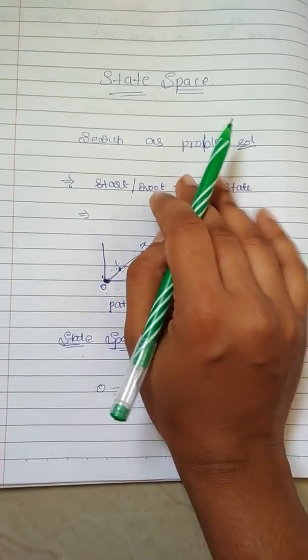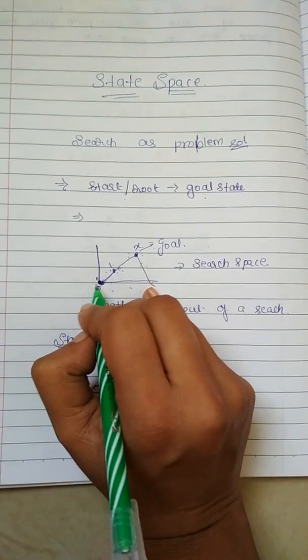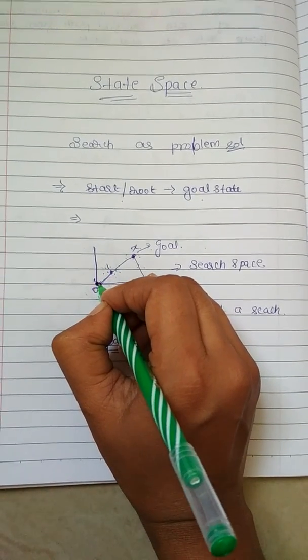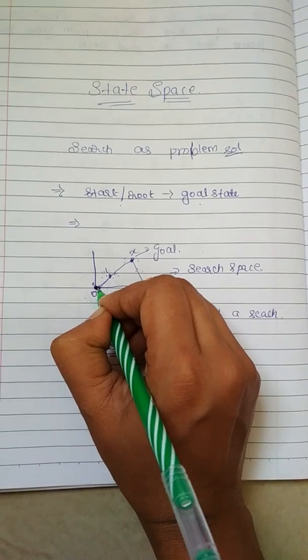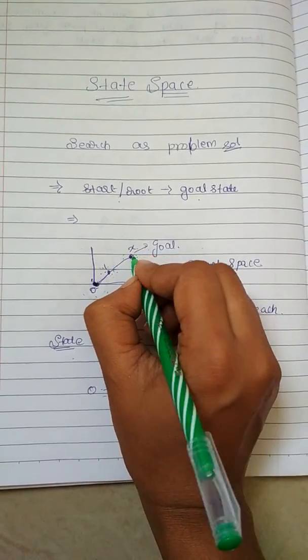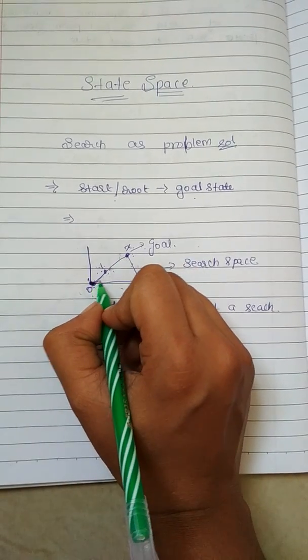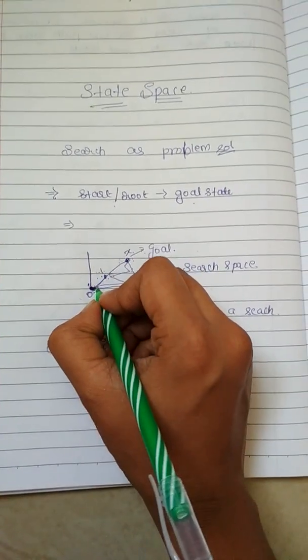How will it be a problem solution? Let's consider this example: you are in this place and you need to go here. This will be the starting point or root point of yours, that is an initial state. Your X is a goal state. What are the paths you will be going? Whether you can go from here, here, here, here and then reach X, or you can go straight and reach X.